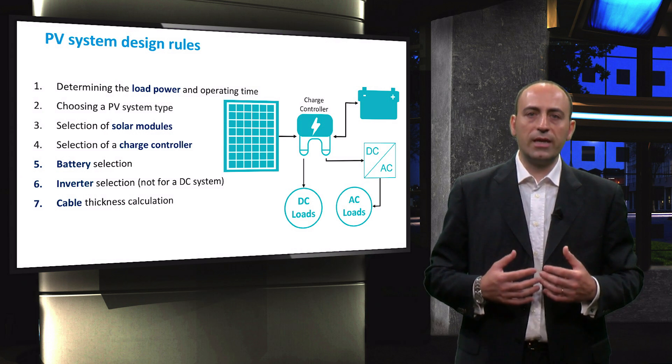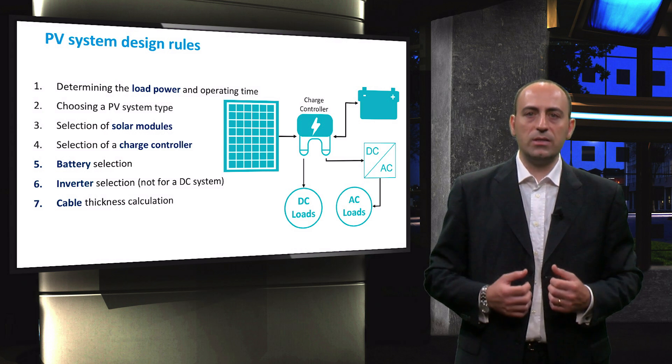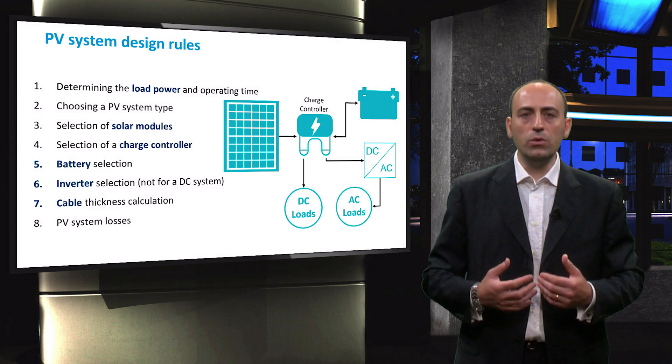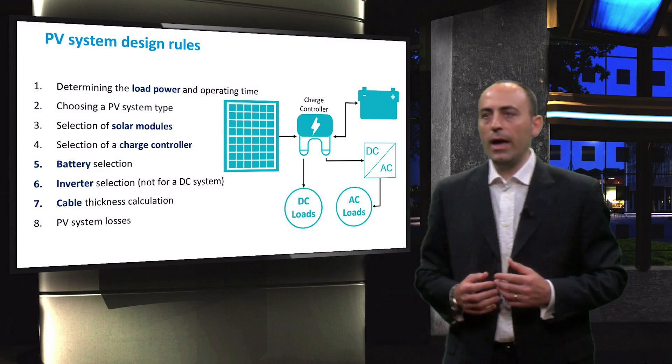Of course, the shorter the cable is, the lower the resistive losses are, which are included in the system losses. Each bullet will be further investigated in the coming videos. For now, I want to show you how to read and where to find interesting data about the properties of a PV module. Thus, let's go together through a typical PV module datasheet.